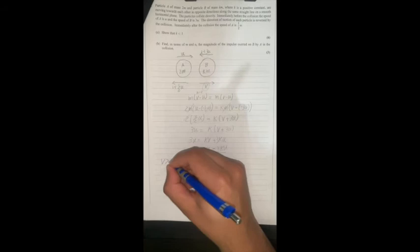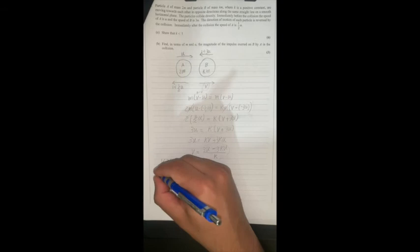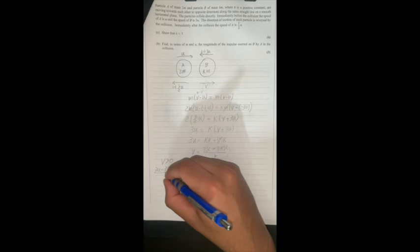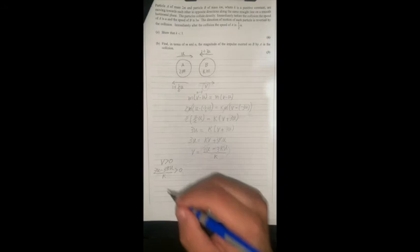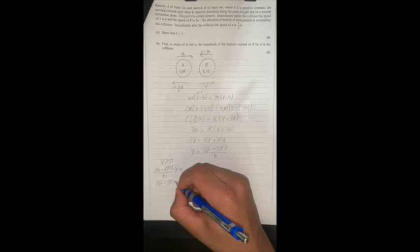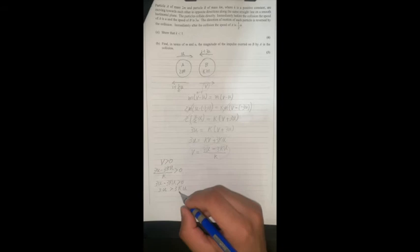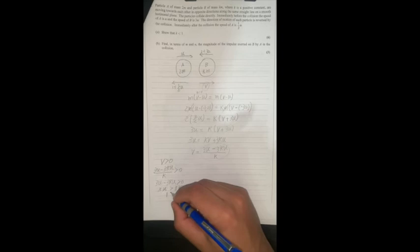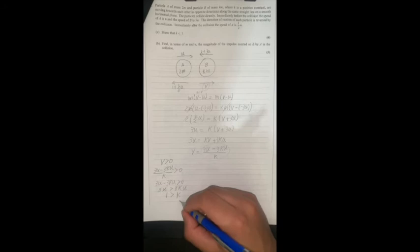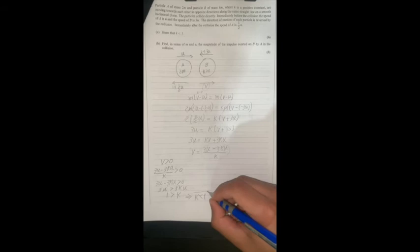The velocity must be greater than zero. For v to be greater than zero, we need (3u - 3ku)/k > 0. The k on the denominator will cancel, so 3u - 3ku > 0, which gives 3u > 3ku. Dividing by 3u, we get 1 > k, or k < 1. This is the answer.